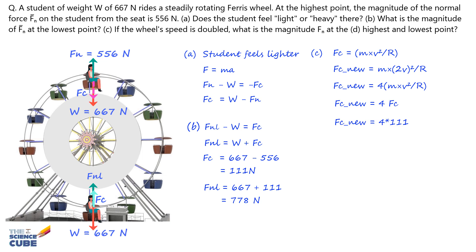Then at the highest point, using the same equation, we get normal force Fn equals W minus Fc new, which equals 667 Newtons minus 444 Newtons, which equals 223 Newtons.